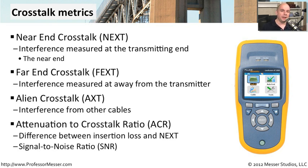An important ratio for understanding how much signal is getting through versus how much crosstalk is present is called the attenuation-to-crosstalk ratio, or ACR. We measure the signal at the insertion point and the near-end crosstalk at that same point to determine how strong the signal is versus how much crosstalk we're seeing. You can think of this as a signal-to-noise ratio, giving us an understanding of how much signal we can expect all the way down the connection.